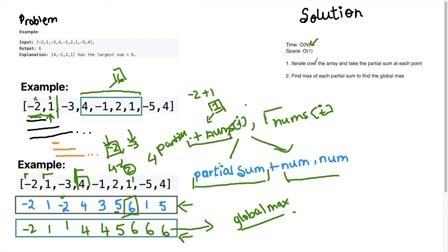And the space complexity is O(1) because we did not need to create any other data structures to store the elements since we're calculating on the go. So to summarize, the solution is to iterate over the array and take the partial sum at each point. And I've explained how we're going to do that. And then just find the max at each partial sum. And that will be our global max. And then just return the global max, which will be the six.